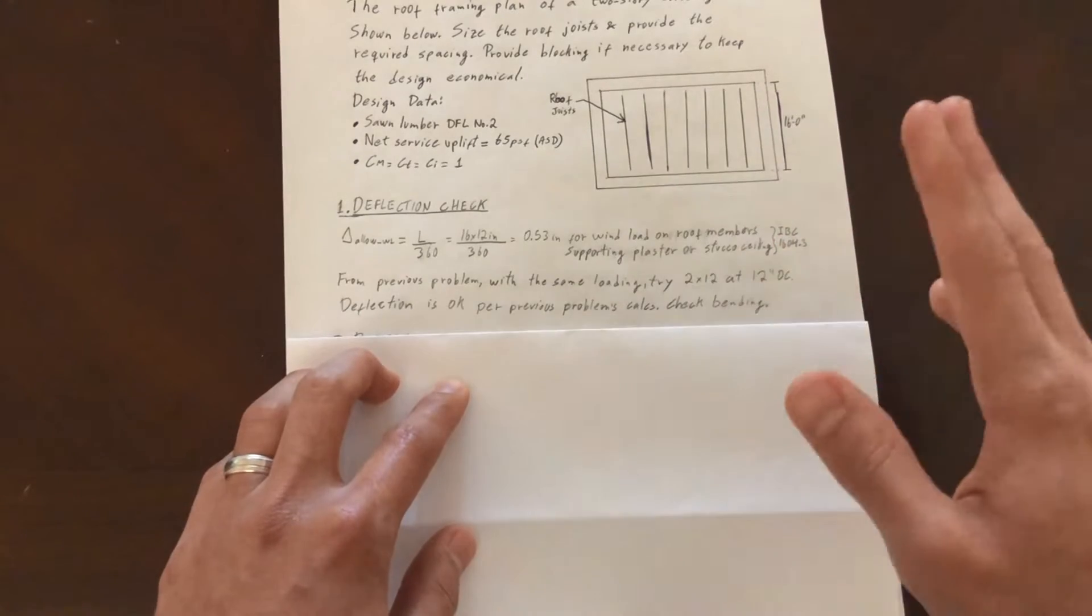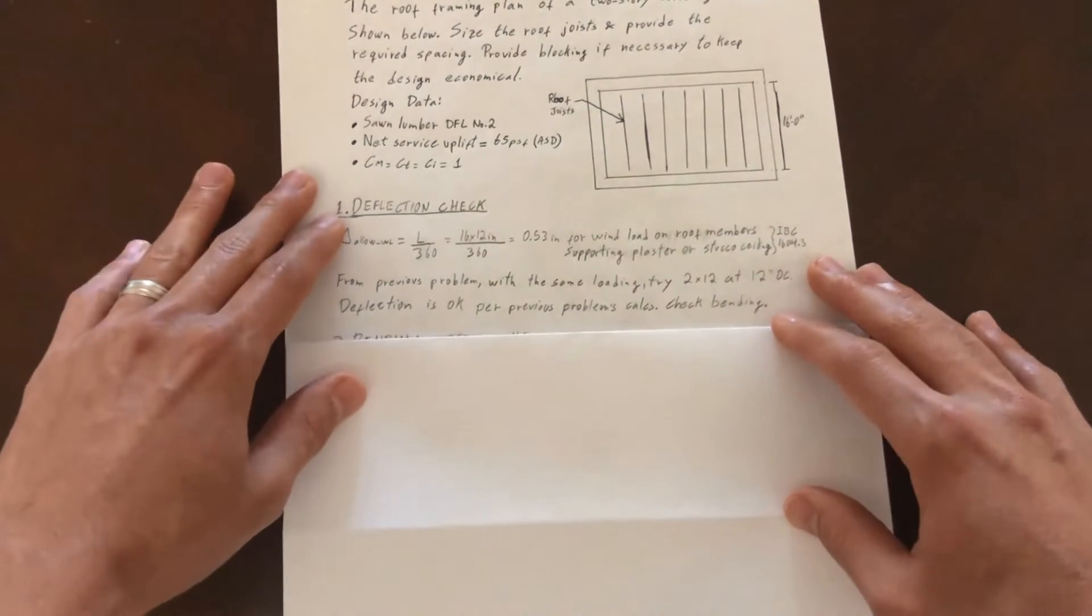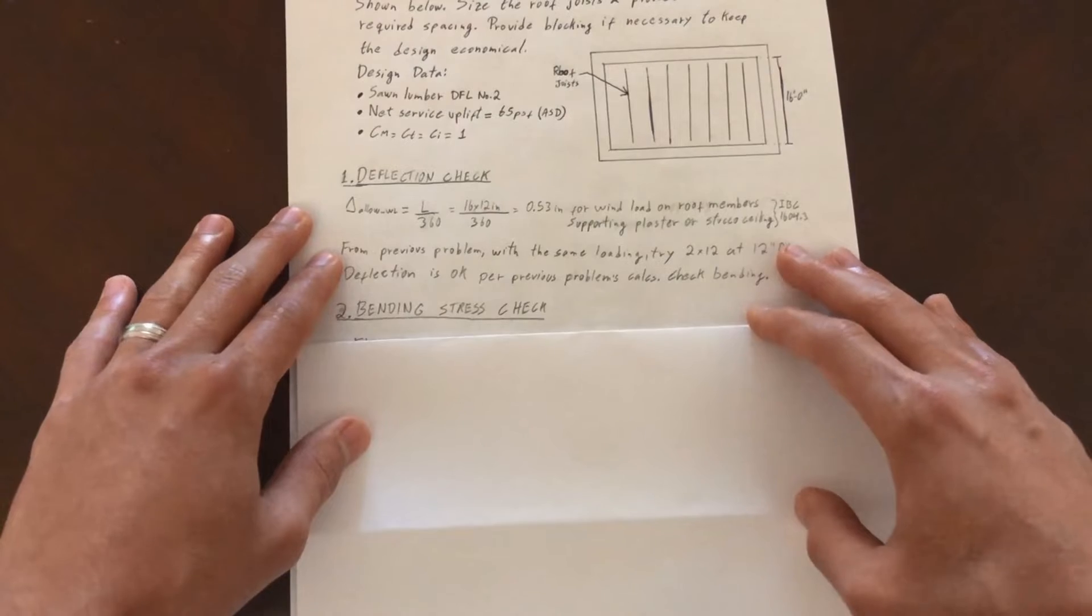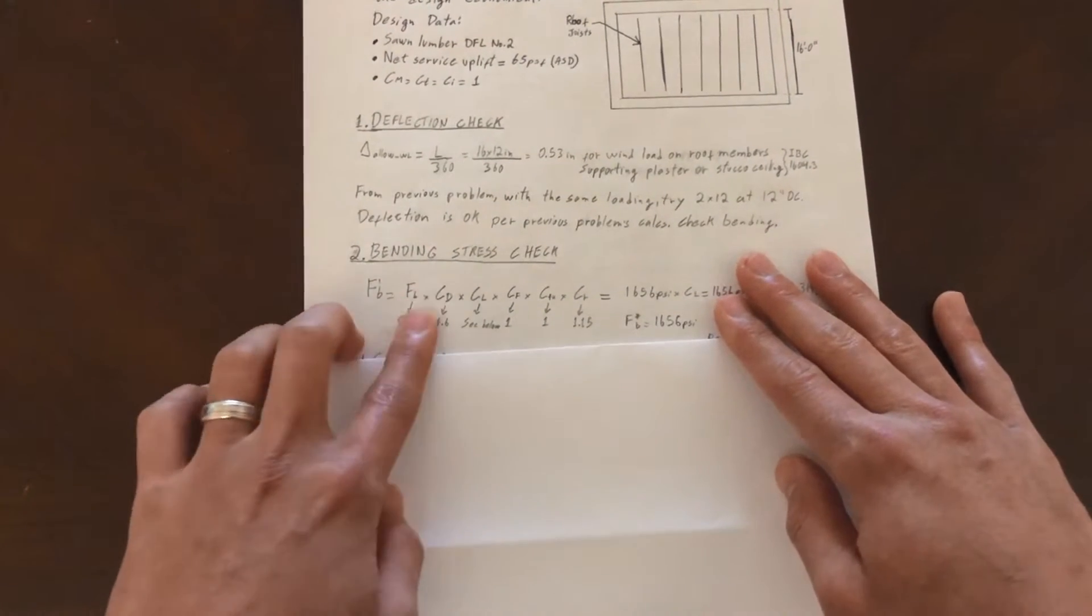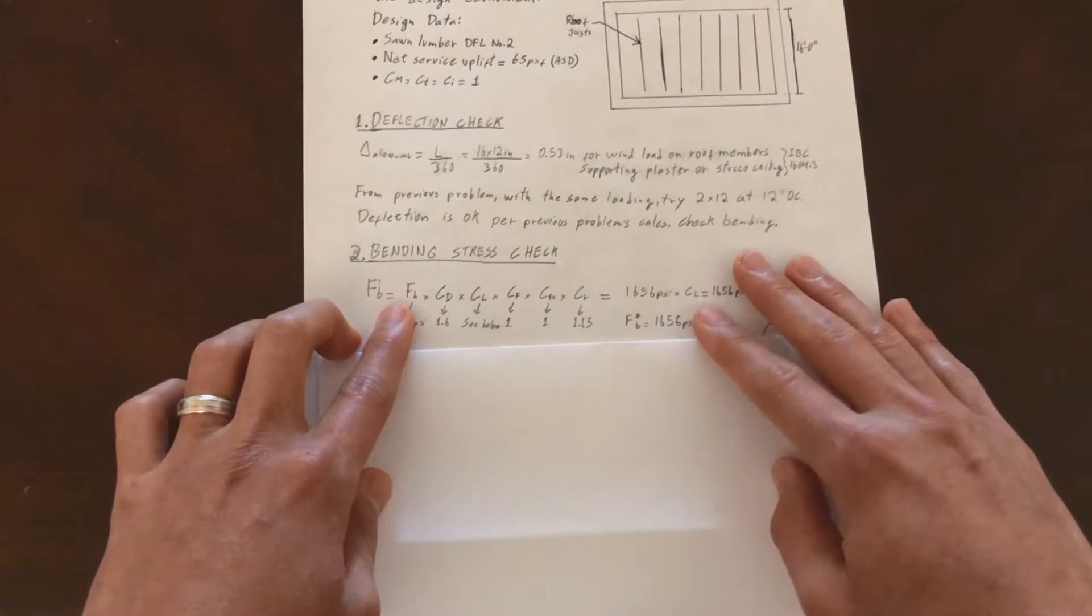You don't want your ceiling, if it's a stucco ceiling, to crack because your members are deflecting too much under wind load. If we use this spacing and this joist and we get it to work, you don't have to worry about deflection because we already calculated it before.